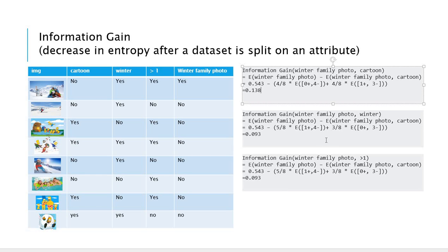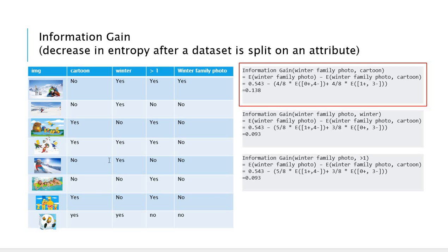Same thing here, when we select winter as a first attribute, the result is 0.093. And when we select more than one person as a first attribute, the information gain is 0.093. We want to select the highest information gain. So we are going to select the cartoon as a first attribute.